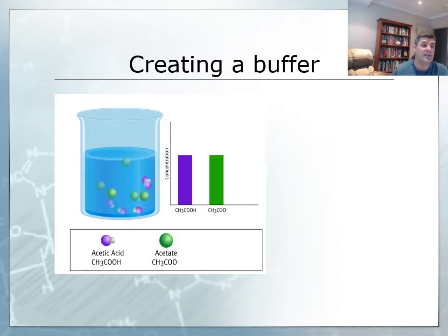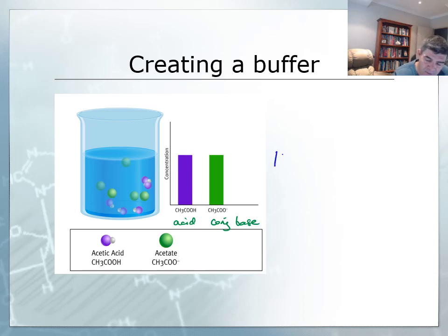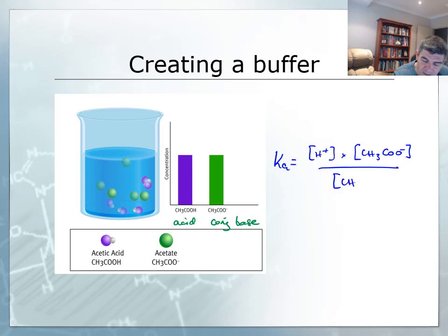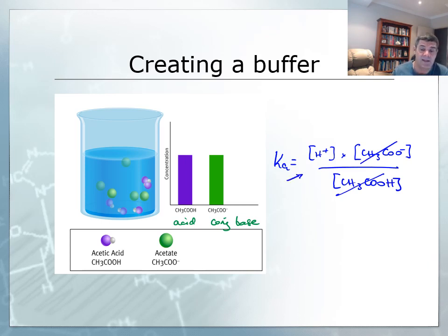Diagrammatically, the concentrations of both the acid and the conjugate base are equal. If we simplify the Ka expression using H⁺ rather than H₃O⁺ — since the water disappears anyway — it becomes clearer that the acid and conjugate base concentrations cancel out. This gives us a direct relationship between the Ka value and the H⁺ concentration, so the pKa is the relevant value to discuss when looking at buffer solutions.